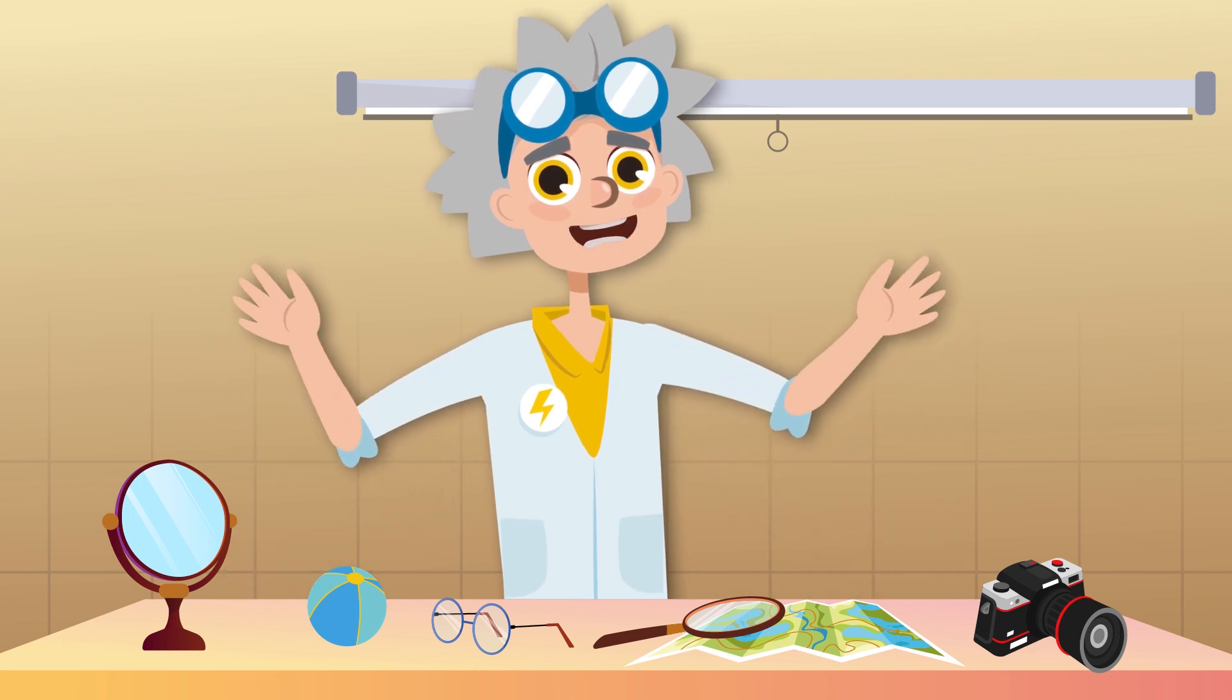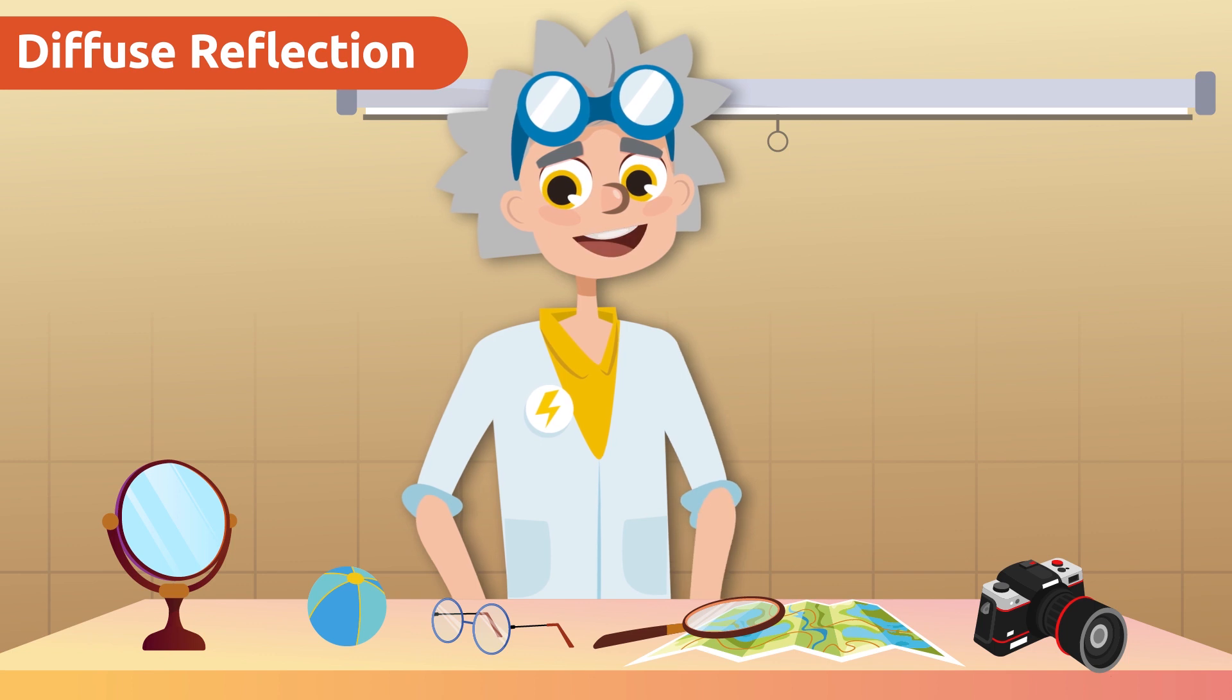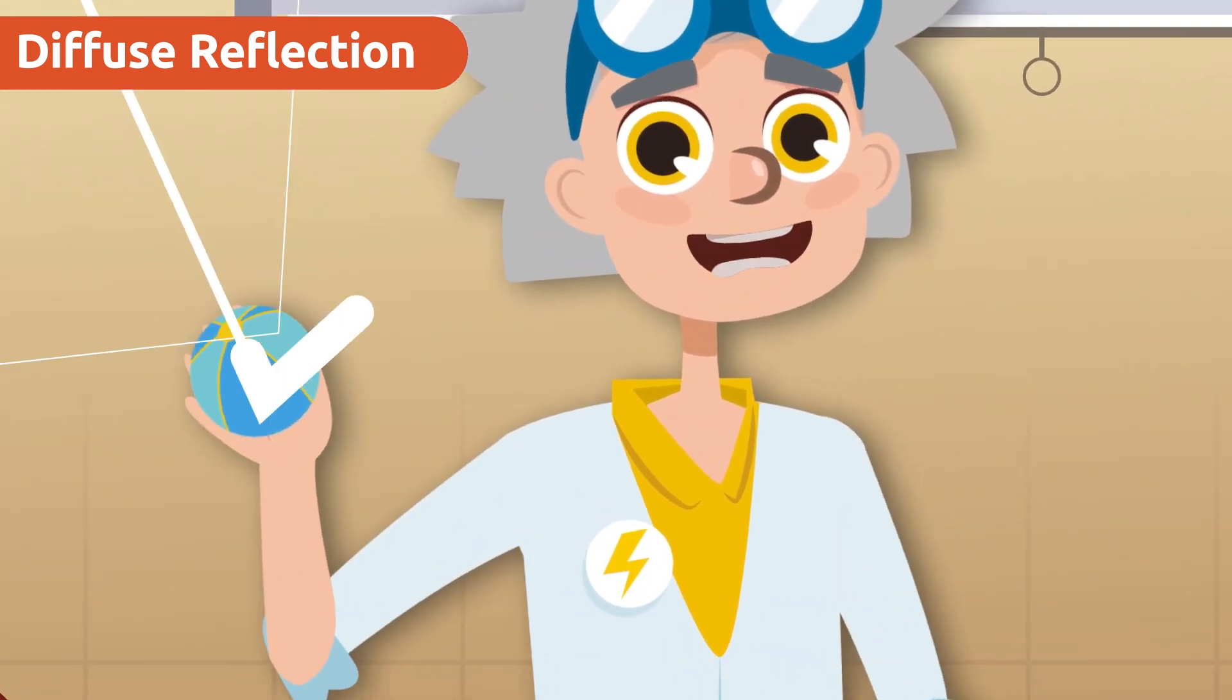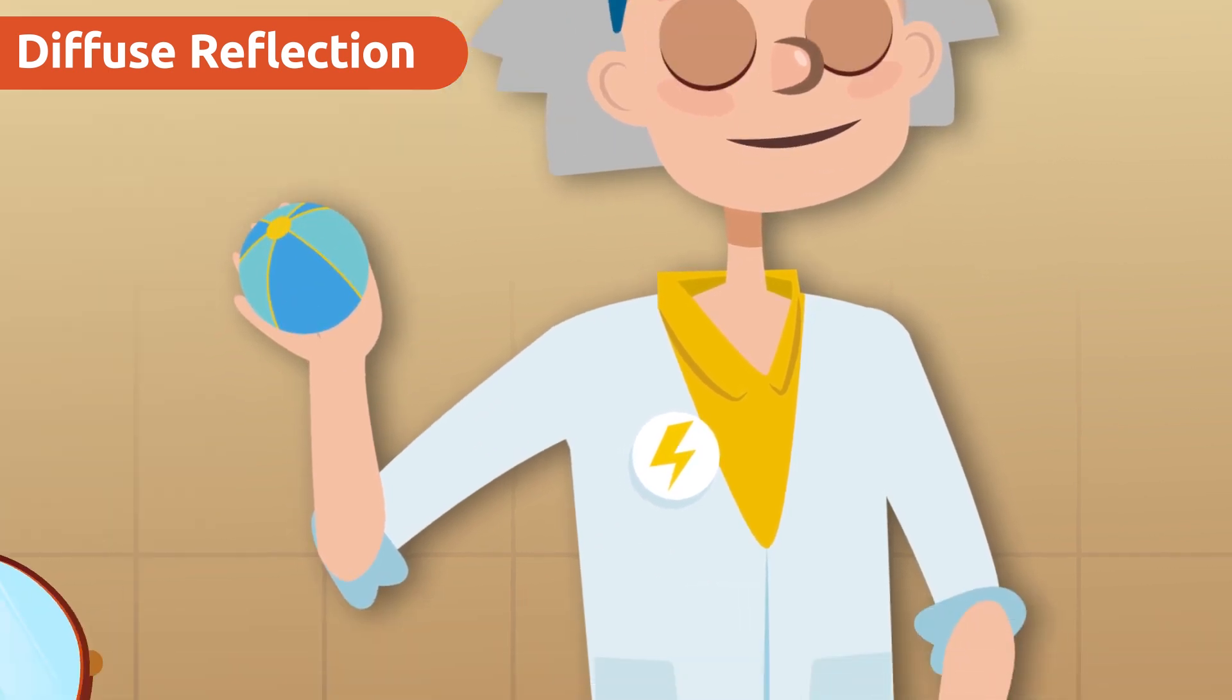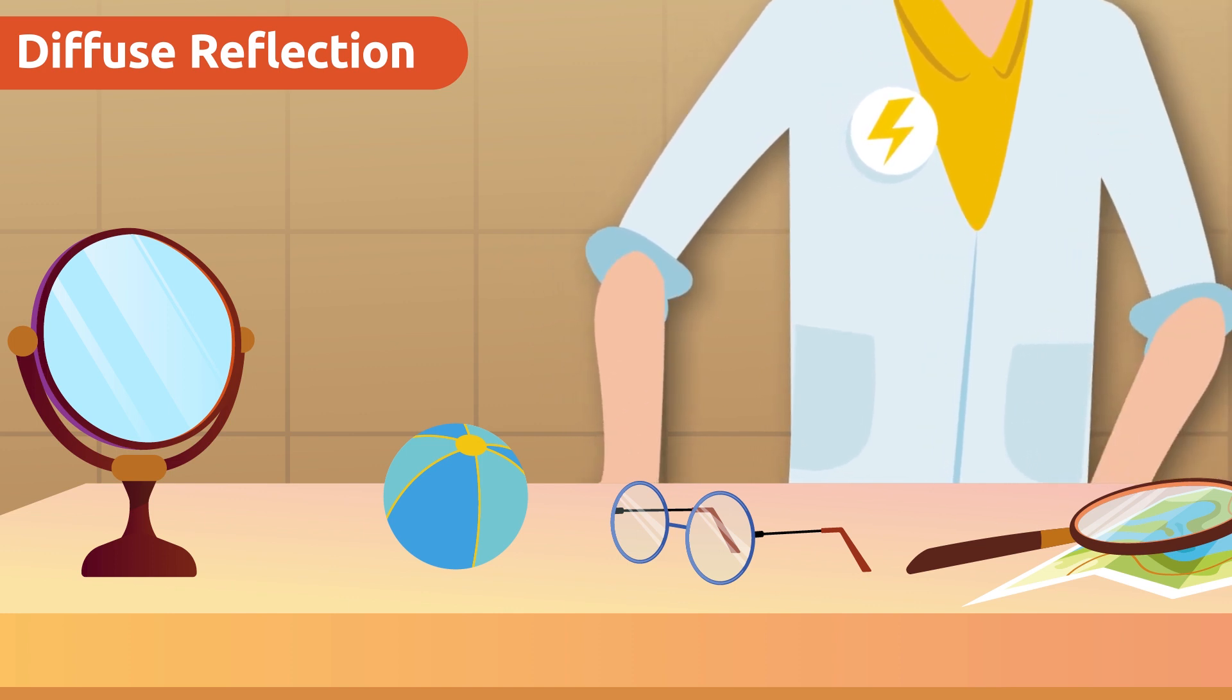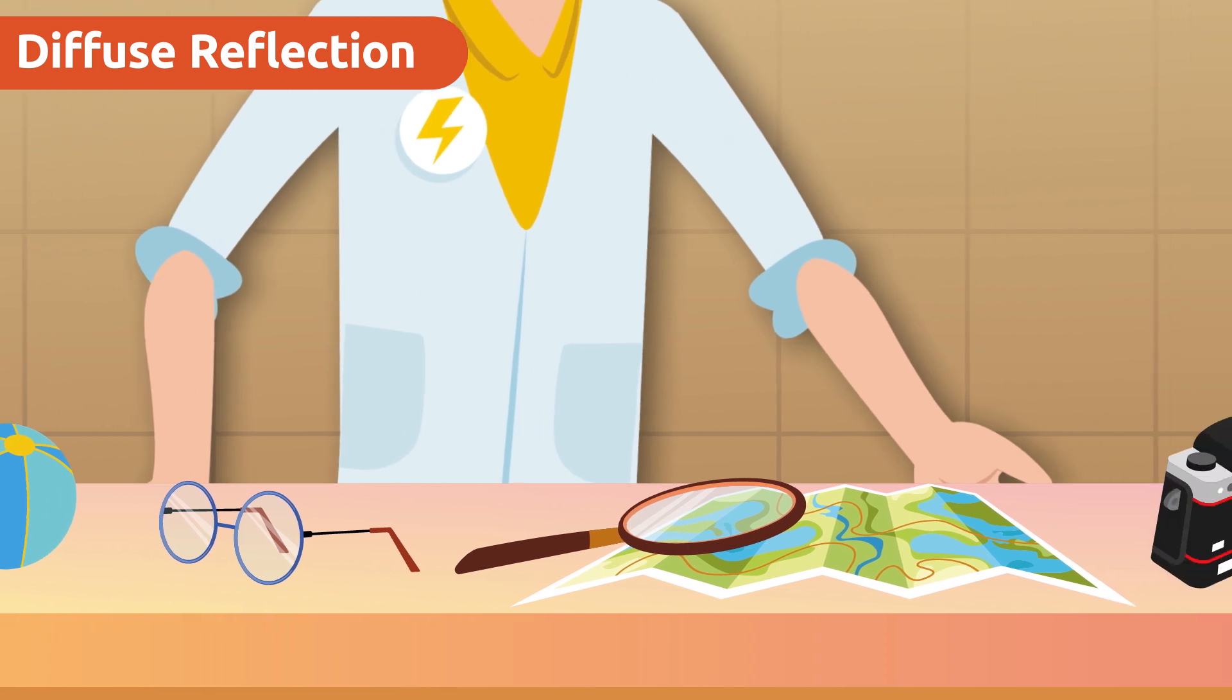However, when rays are reflected in different directions, this is called diffuse reflection, which is what allows us to differentiate some objects from others, so we can appreciate every detail. Diffuse reflection allows us to know, for example, that this is a ball, and we can differentiate it from other objects.